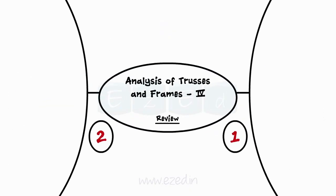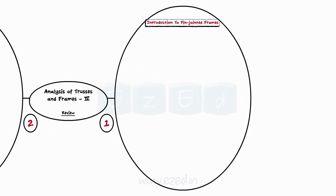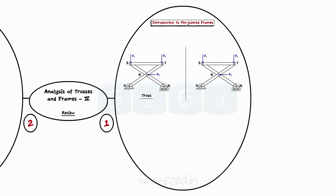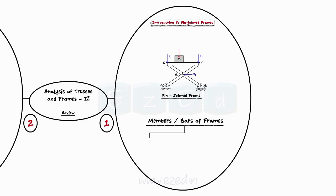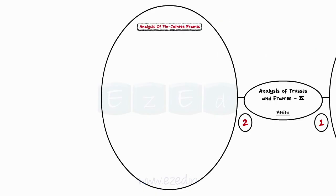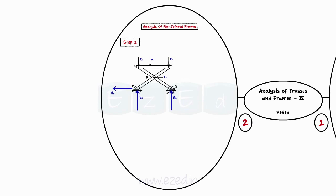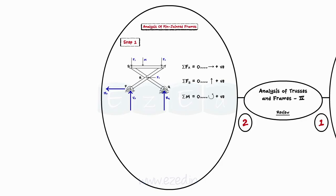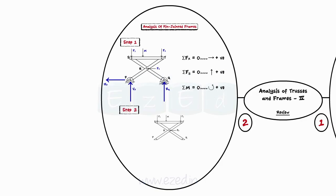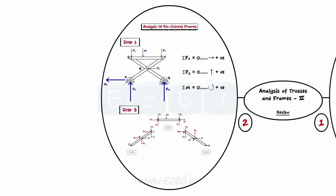Let's have a quick review of what we have studied in this lecture. We first learnt about pin-jointed frames: the basic difference between a truss and a pin-jointed frame is that in trusses, forces act only at the joints, whereas in frames, external forces can be applied on members as well as on pin joints, subjecting bars to bending forces as well as tension or compression. Then we learnt the method to analyze a pin-jointed frame: first find all support reactions using equilibrium, then dismember the frame and draw free body diagrams, and finally apply conditions of equilibrium to the members separately to find the pin reactions.